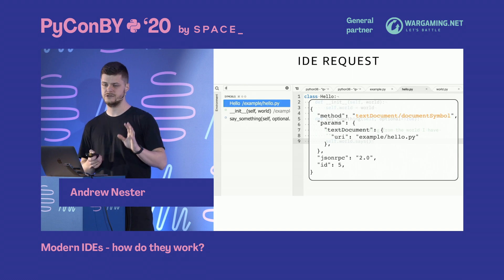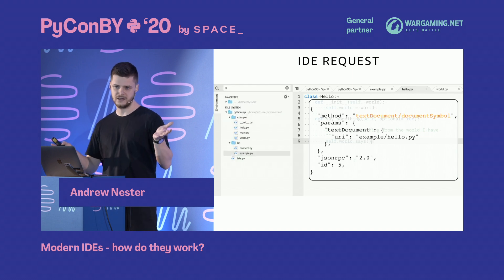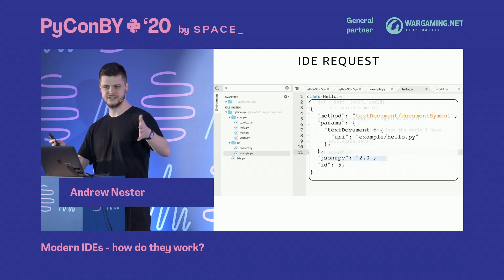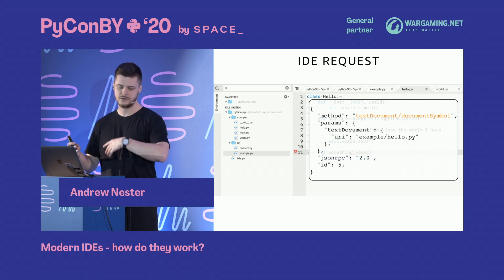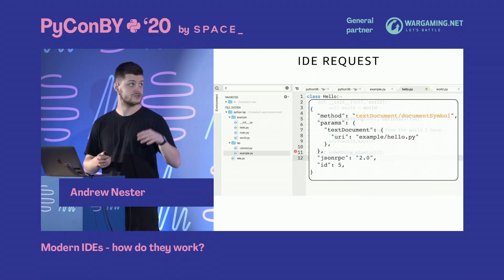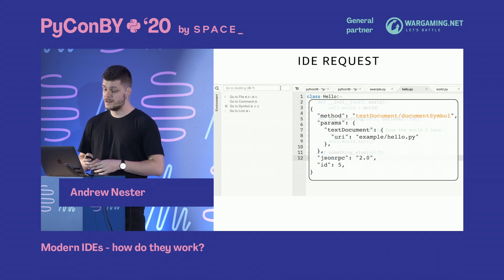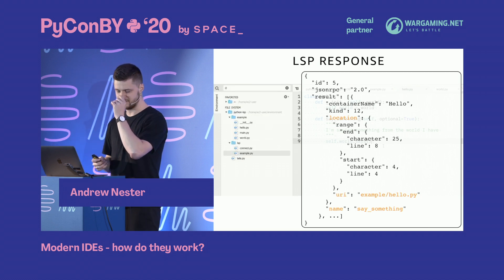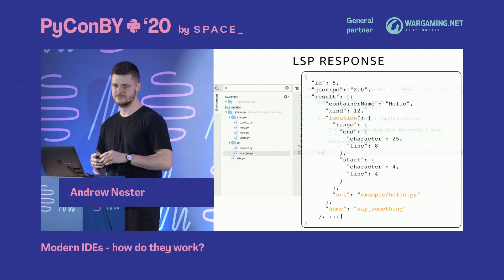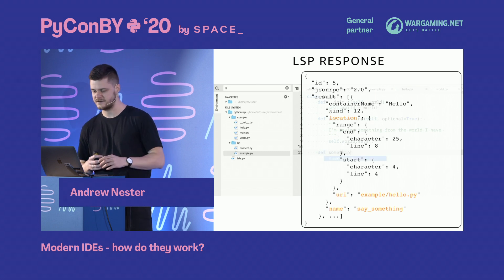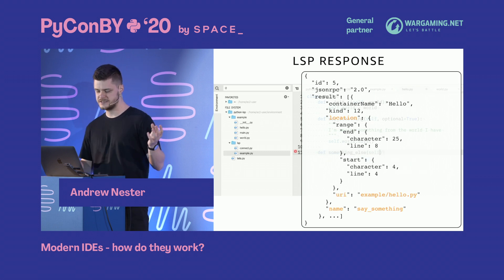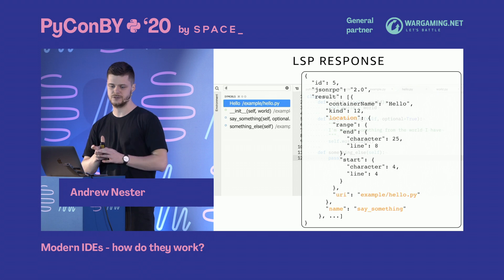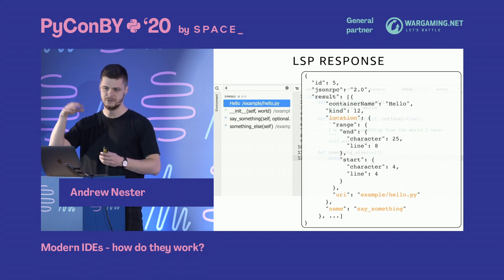How does it work? It's a bit different — you don't care about position, only about the file. You just tell the LSP server: here's the file, please return all the symbols in it. It returns a list — in real examples it can be thousands of symbols — where each entry defines the file, the symbol name, and the range where it's defined, so you can navigate quickly.